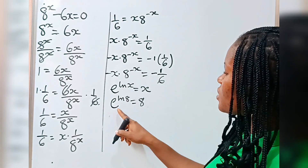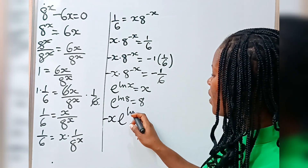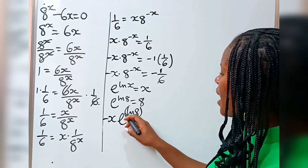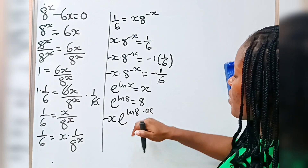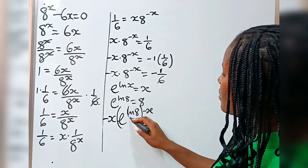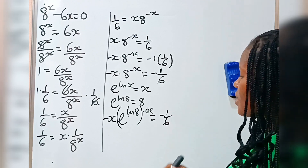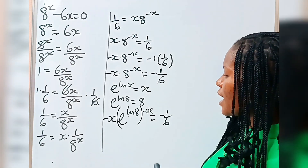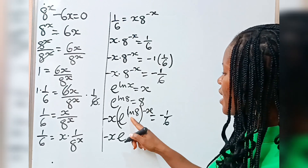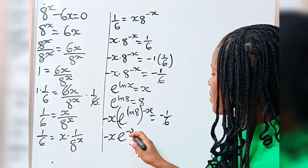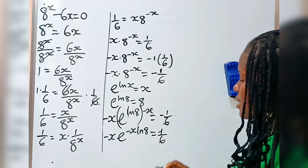So I am going to replace this 8 with e to the power of ln 8. So I have minus x times e to the power of ln 8 raised to the power of minus x. Everything is raised to the power of minus x, which is equal to minus 1 over 6. If you look at this, we have minus x times e to the power of minus x times ln 8, giving us minus x ln 8 is equal to minus 1 over 6.